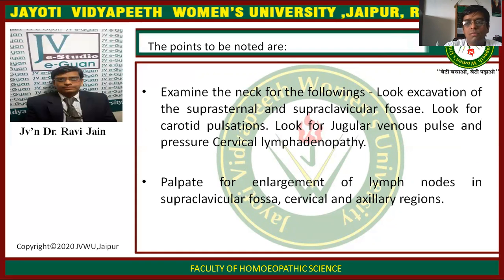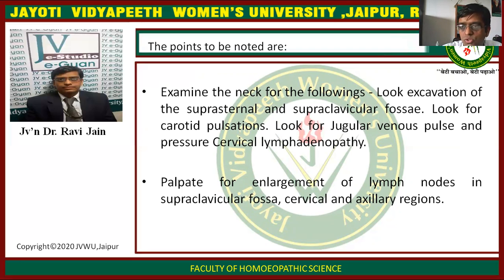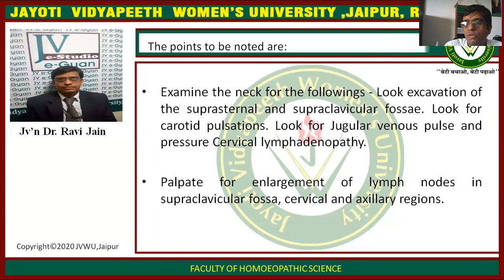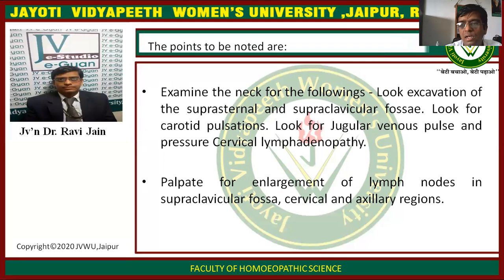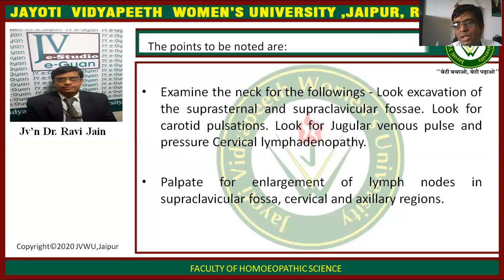Then examine the neck. Look for retraction of the suprasternal and supraclavicular fossae. Check the suprasternal and supraclavicular fossae and look for pulsations. Look for the jugular venous pressure — whether the jugular veins are prominent. Check the jugular venous pressure and cervical lymphadenopathy. While examining the neck, always palpate the lymph nodes to check for any lymphadenopathy. Palpate for enlargement of lymph nodes in the supraclavicular fossa, cervical, and axillary regions.